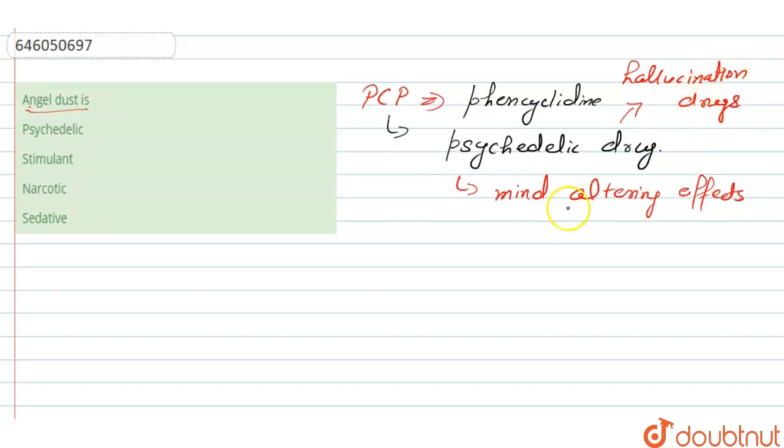These drugs alter the mind and can cause hallucination effects, producing a dream-like state in a person. PCP is believed to be the most dangerous drug of abuse.